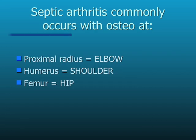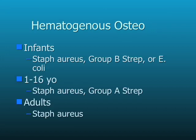Septic arthritis most commonly will occur at the elbow with the proximal radius, at the shoulder and in the humeral head, and in the femoral head and hip. In infants, you most often see Staphylococcus aureus, particularly now with community-acquired MRSA. You can also see Group B Strep or E. coli. In young children to teens, again it's going to be Staphylococcus aureus, sometimes Group A Strep. And in adults, it's usually Staphylococcus aureus.